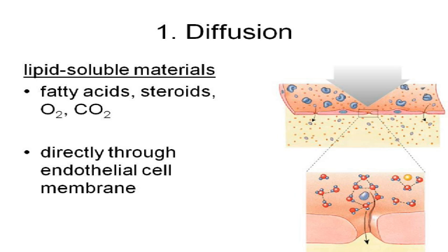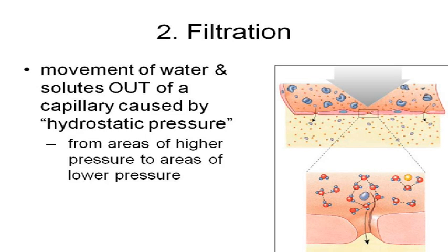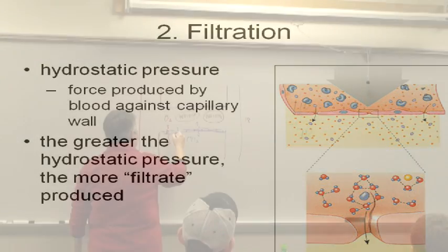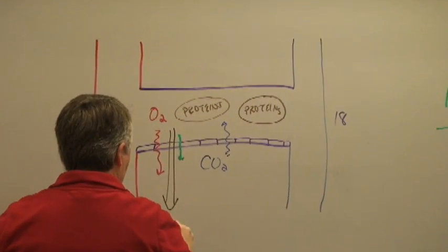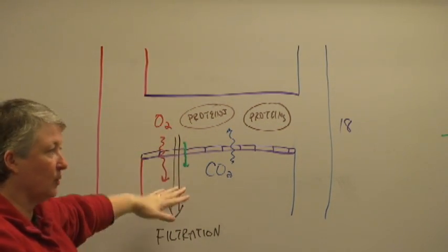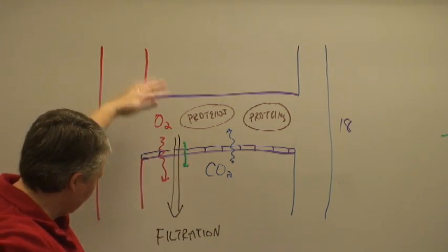Diffusion happens if there's a concentration gradient and a mechanism for materials to get across the capillary wall. Filtration is basically using fluid pressure — hydrostatic pressure — to force fluid and anything dissolved in that fluid out of the capillary. At the beginning of the capillary, blood pressure is greater than it is at the end, because blood pressure drops the further you move from the heart. So filtration occurs on the arterial end of the capillaries, forcing fluid through the capillary wall into the interstitial tissue.